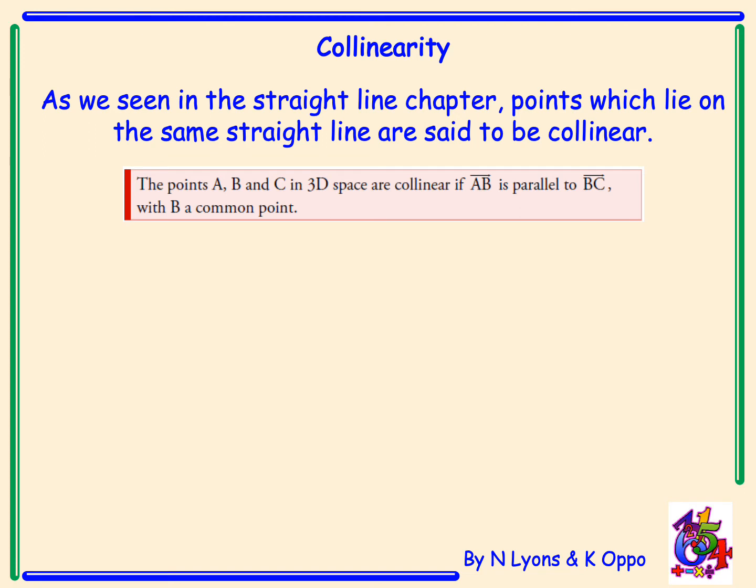If we have the points A, B and C in 3D space, they are collinear if AB is parallel to BC, with B a common point.